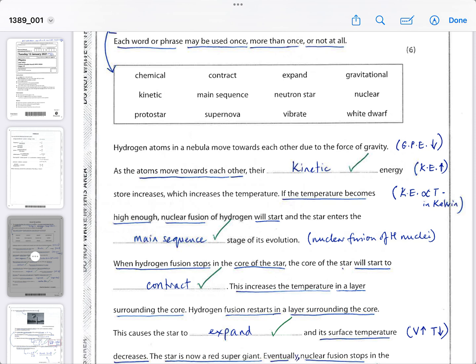As the atoms move towards each other under gravity, the kinetic energy store increases, which increases the temperature. The kinetic energy of the particles is directly proportional to the temperature in Kelvin. So this is a good revision of not just astrophysics but it's an application of solids, liquids and gases.